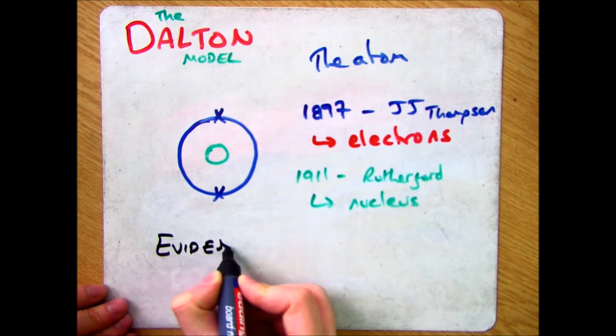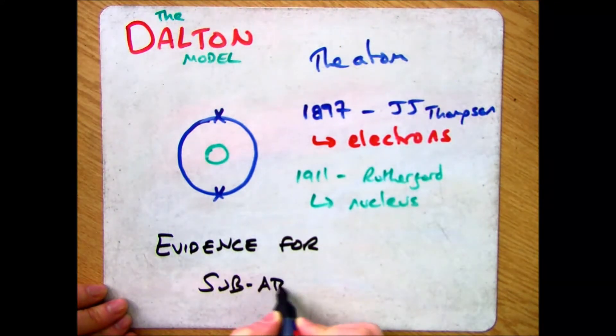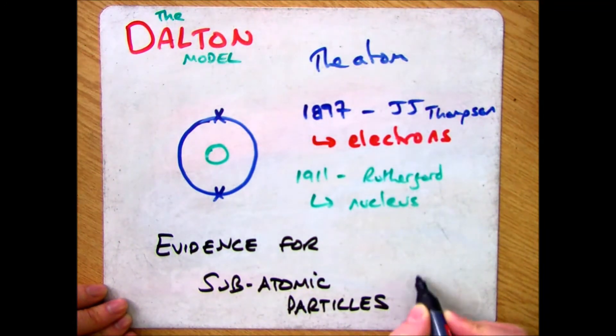Evidence backed up by Niels Bohr, who developed Rutherford's nuclear atomic model even further and found out that there were shells that the electrons occupied.